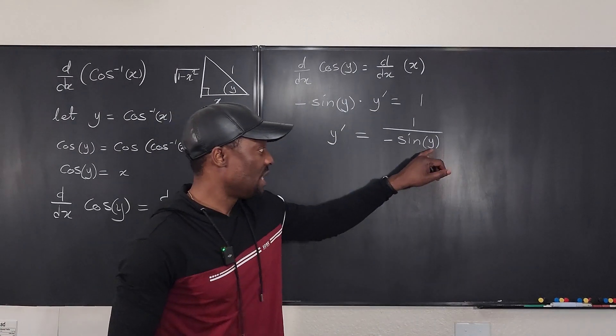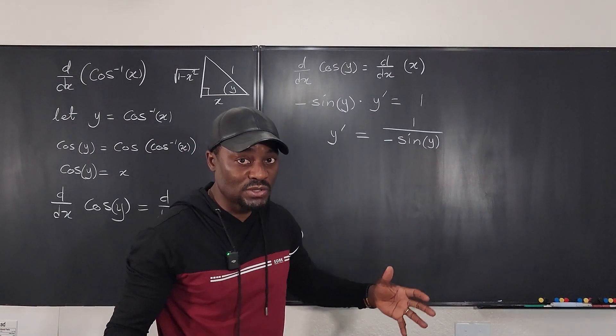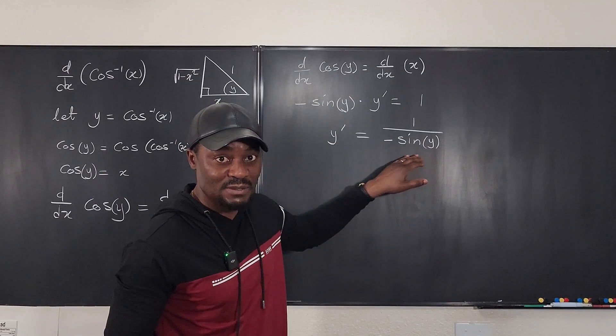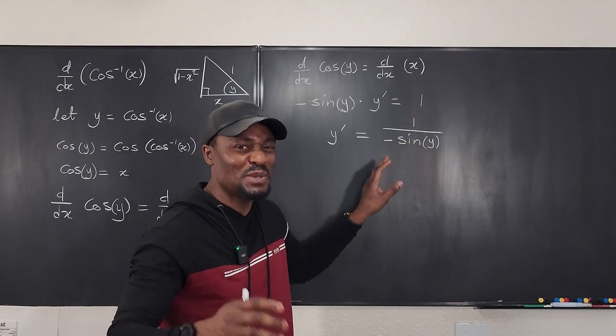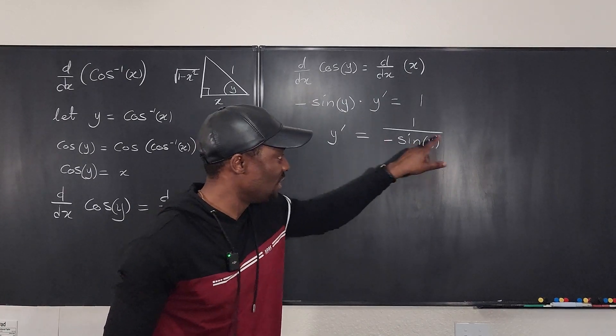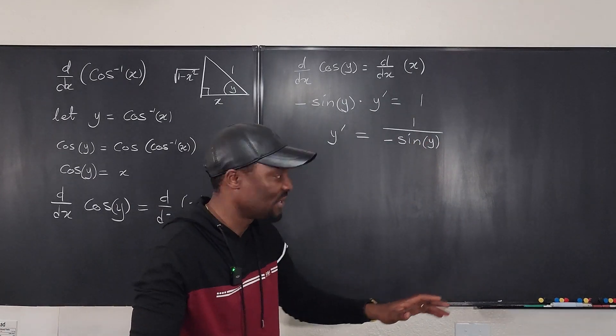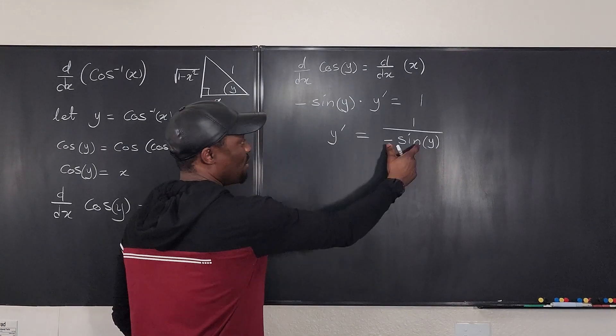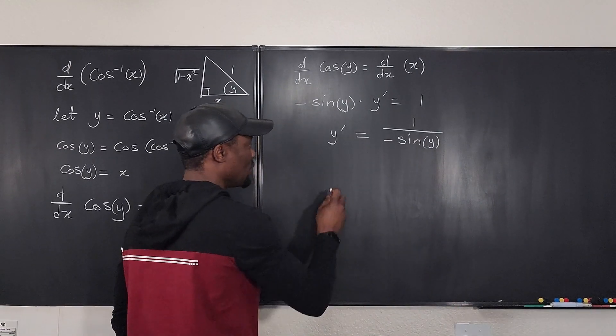Now we can't have y be any of the multiples of pi or zero in this case because that will make this undefined. But because we're doing a derivation, we don't need to say that yet. But at this point, this bottom cannot be zero. But we're going to change it. That's why we can leave it.